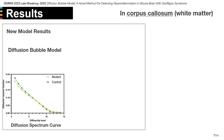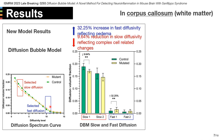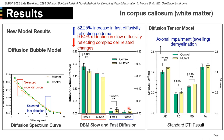Moving to the new model results: firstly, our new model can plot different curves for the mutated mice, shown in yellow, comparing to the control mice in green. We select the slow diffusion component and fast diffusion component in red and blue boxes. If we zoom in, we can find there is a reduction in slow diffusivity, which reflects complex cell-related changes. Also, there is an increase in the fast diffusion component, which reflects edema. DTI results further revealed axonal impairment and demyelination by increased axial diffusivity and radial diffusivity.